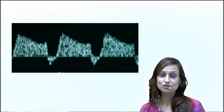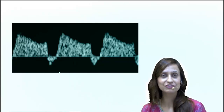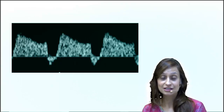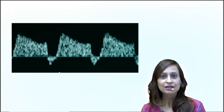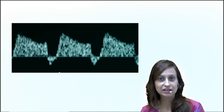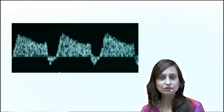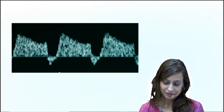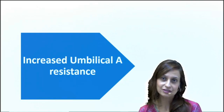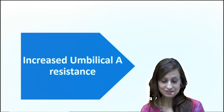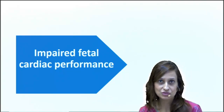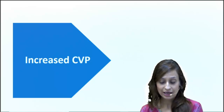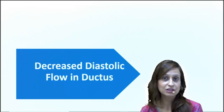Hello everyone. Dr. Sumei just showed us the reversal of flow in the ductus venosus — specifically the reversal of the A wave — and as he mentioned, this is an abnormal finding with great clinical implication. Now let us see why we see this reversal. In normal flow there is always forward flow, and changes begin with increased resistance in the umbilical artery. This increased resistance in the umbilical artery leads to impaired fetal cardiac performance, which in turn leads to a rise in central venous pressure, and as a result the diastolic flow in the ductus venosus will reduce.